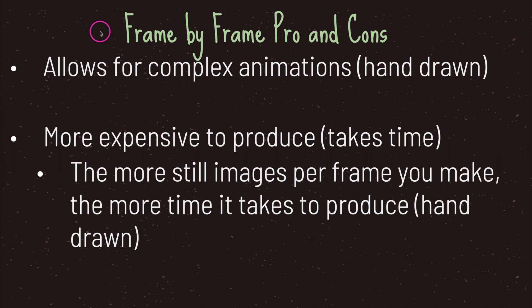Frame by frame animation requires you to create the smoothest possible illusion of movement. I had to take time to draw six circles at six positions. If I really wanted to give the illusion that the circles were moving smoothly from left to right, I'd have to draw more circles and carefully place them in positions that give the illusion of smooth movement. When it comes to game animation, you're not going to draw movement — instead, you'll draw some type of animation that, combined with code, gives that illusion. The fact remains that it does take time to draw frame by frame, and the more images you want shown per second, the more time it takes.